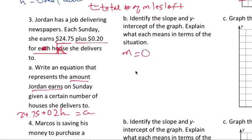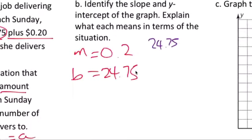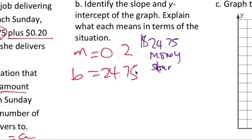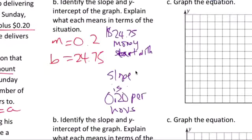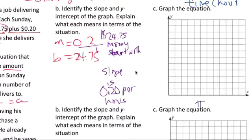Okay. The slope is 0.2. The y-intercept is 24.75 is what she's already earned. She's earned 24.75 is the money. It's the money she starts with before she. Okay. And then slope is 20 cents for a house. So 20 cents for one house. So this one is the number of houses. Okay, that's how you do this.